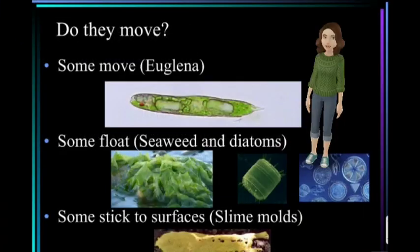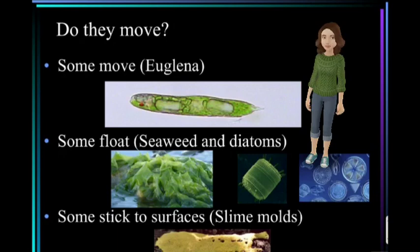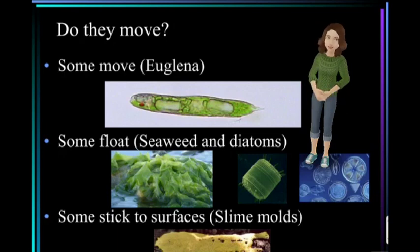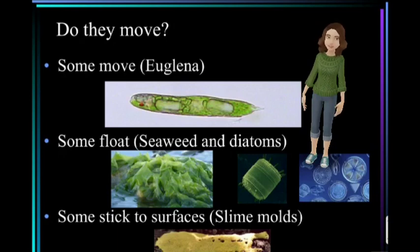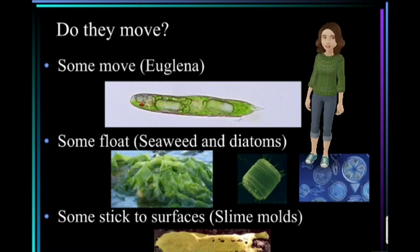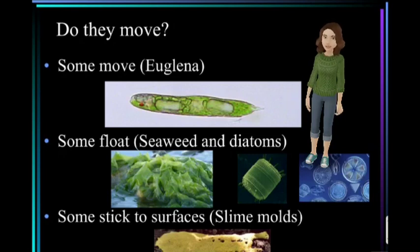So can protists move? Some move by using flagella or cilia, so they wiggle around hairs to move around. Some just float about like seaweed and diatoms, and some stick and slide over surfaces like slime molds.